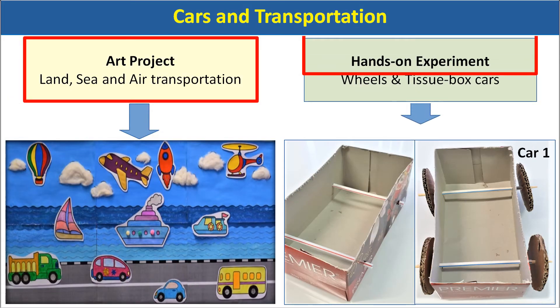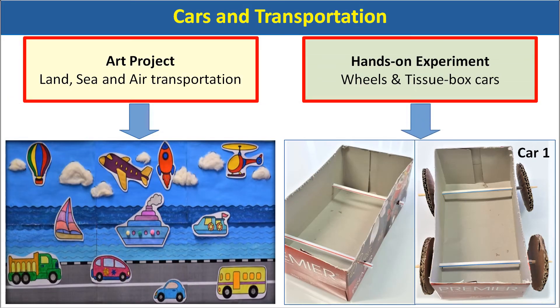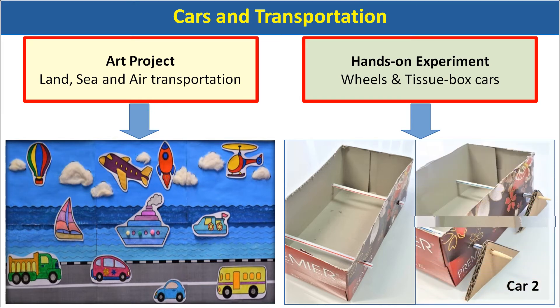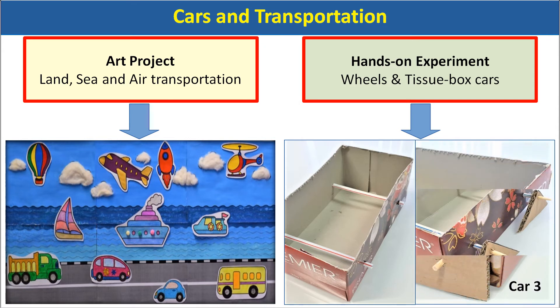For the hands-on experiment, children will build a car using a recycled tissue box, then use different shapes of wheels to try rolling the car along.